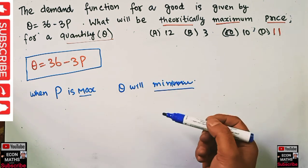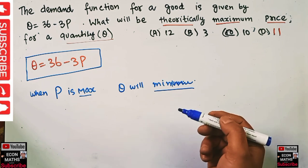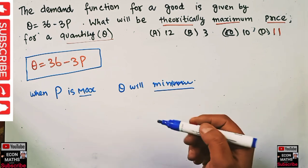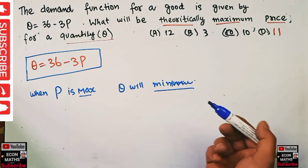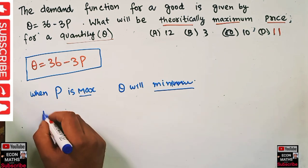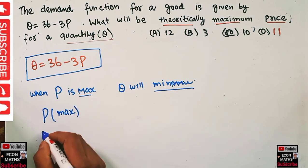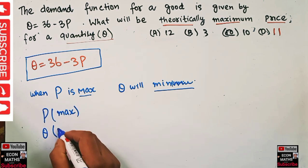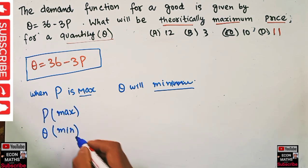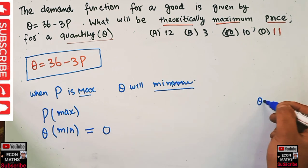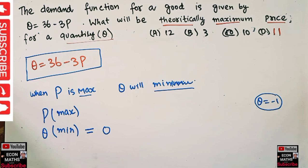What can be the minimum quantity theoretically possible? Theoretically, the minimum quantity that is possible will be zero. When P is maximum, Q will be minimum. What will be theoretically a minimum possible value for Q? It is zero. We cannot say Q = -1; negative quantity doesn't make sense in economics.